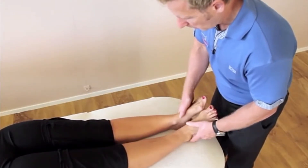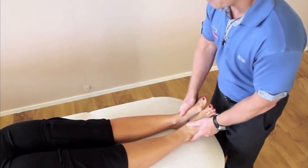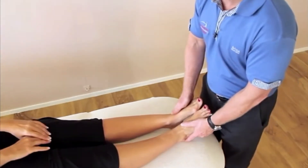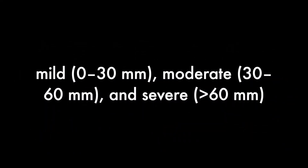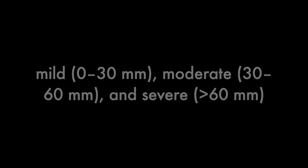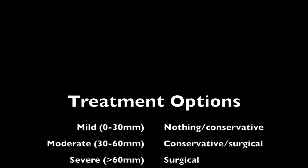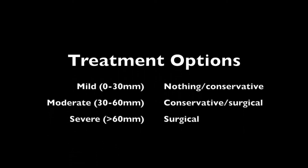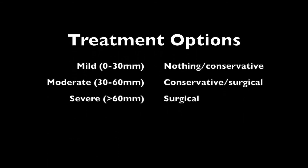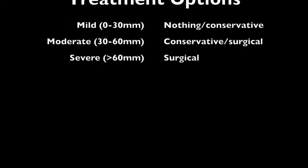Some evidence suggests dividing leg length discrepancy into three categories: mild at 0 to 30 millimeters, moderate at 30 to 60, and severe as greater than 60 millimeters. These authors recommend mild cases should either go untreated or be treated non-surgically like with a heel lift, moderate cases should be dealt with on a case-by-case basis, and severe cases should be corrected surgically.